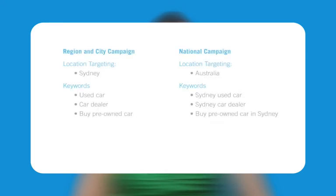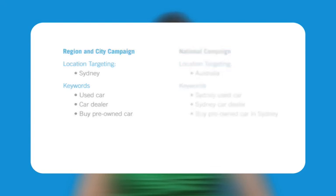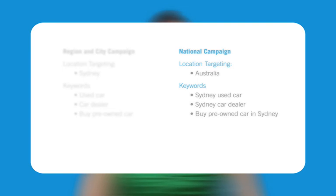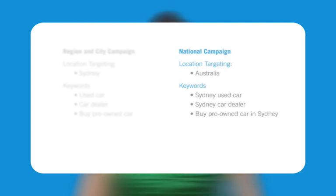Let's compare a regionally targeted campaign with a nationally targeted one that achieves the same results — in this case a car dealer in Sydney. Campaign 1 shown here targets Sydney using the general keywords used car, car dealer and buy pre-owned car. By creating a national campaign that uses specific keywords for Sydney, Google will automatically show your ads targeted to users in Sydney. Notice how the same keywords are used except with the location added as one of the keywords.